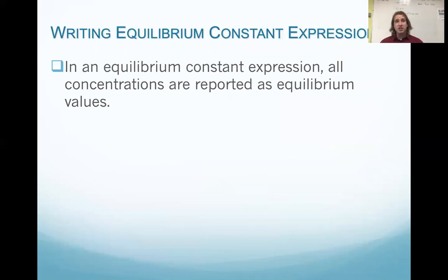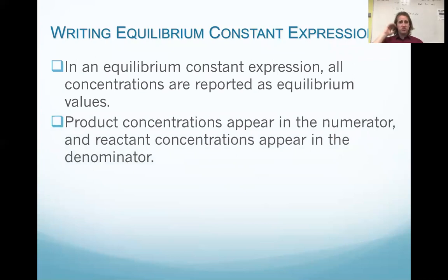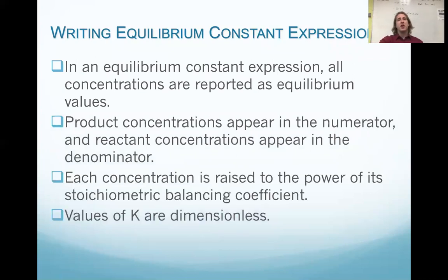So in an equilibrium constant expression, our concentrations are reported as equilibrium values. Not what they started with, but what did you have after the reaction has occurred? Your products are in the numerator. Reactants are in the denominator. Each concentration is raised to its stoichiometric balancing coefficients. We're just putting the coefficients in based on the balanced equation. And our values on this K are dimensionless. There's no units. It's just a number, a ratio, a value to tell us whether we expect to see more products or reactants formed.